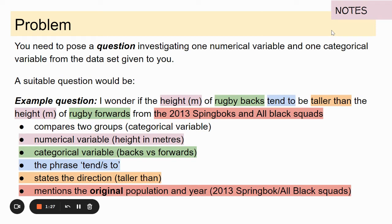You must have that phrase 'tends to' in there because we can't be absolute about it. When we're talking 'tends to' we're saying in general rugby backs will be taller than rugby forwards. State the direction, so taller than, and mention the original population and the year, 2013 Springbok All Black squads.